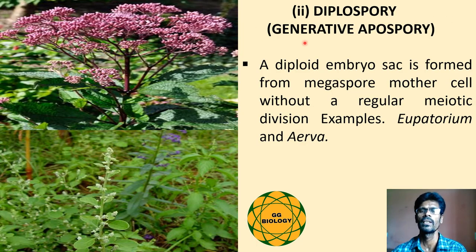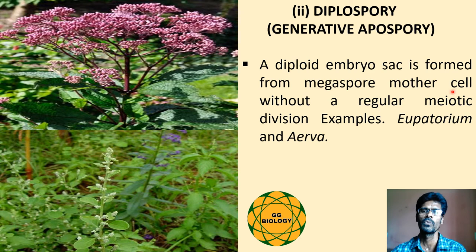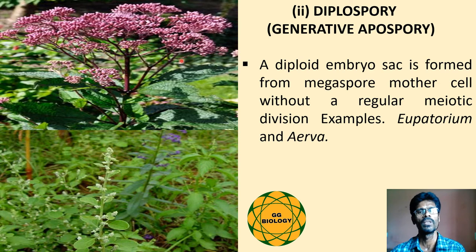The second type is diplospory, also called generative apospory, in which a diploid embryo sac is formed from the megaspore mother cell without regular meiotic division, as in the case of Eupatorium and Taraxacum.